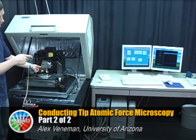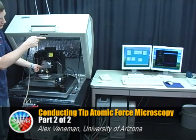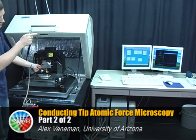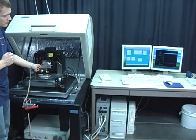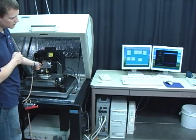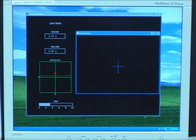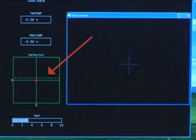Moving the detector around, we can see a dot moving on our screen across the position-sensitive photodiode. We'll zero out the detector by adjusting the knobs so that the simulated laser beam is right in the center of our position-sensitive photodetector.